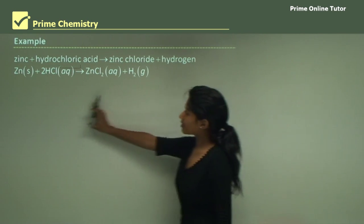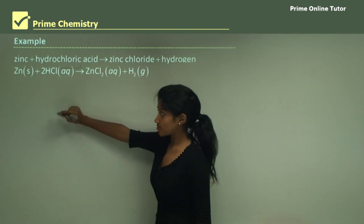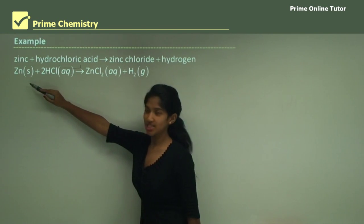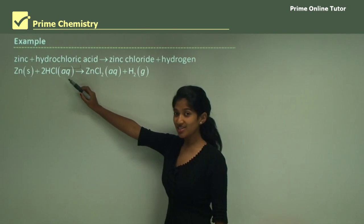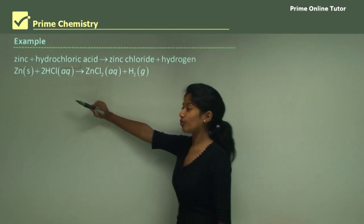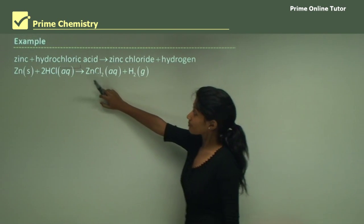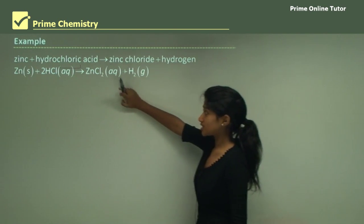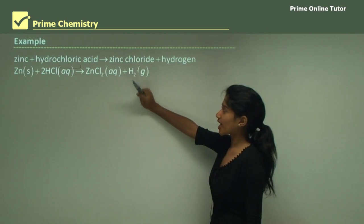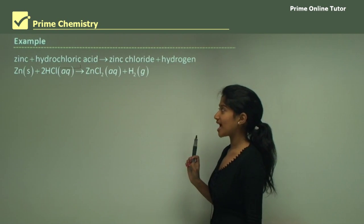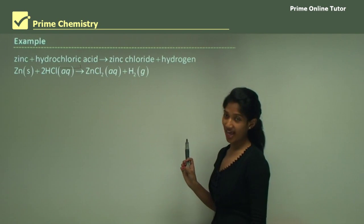Note that the states are written. Zinc is a solid. Hydrochloric acid is an acid so it's in aqueous form. The salt is also in aqueous form. And we have hydrogen gas as a gas.